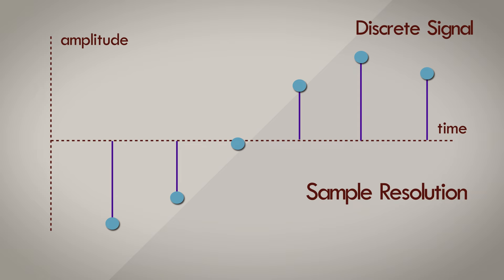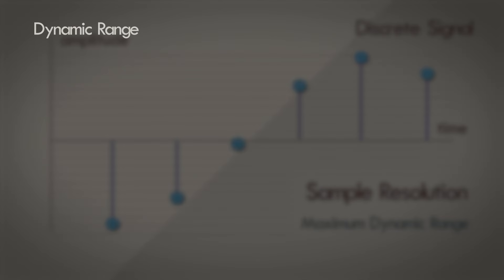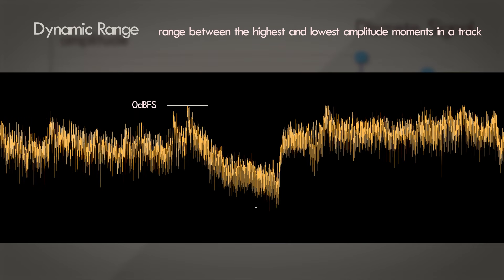And what about sample resolution then? The size of the sampling interval along the amplitude axis, or the y-axis in this case, determines the maximum dynamic range that the digital signal can represent. Dynamic range is the range between the highest and the lowest amplitude moments in the sound.